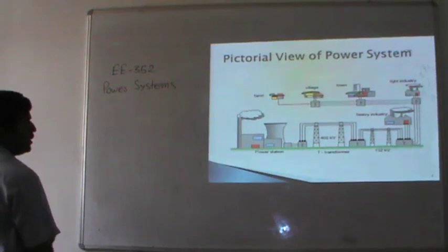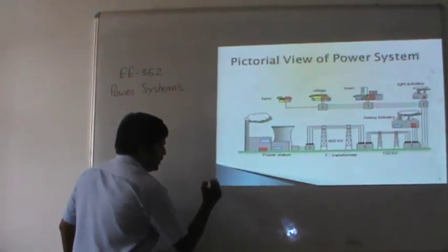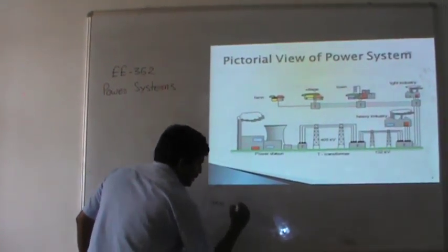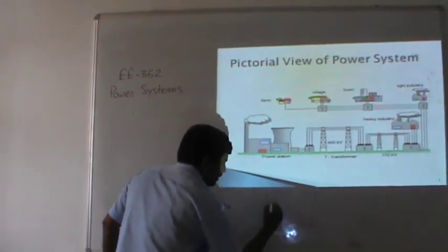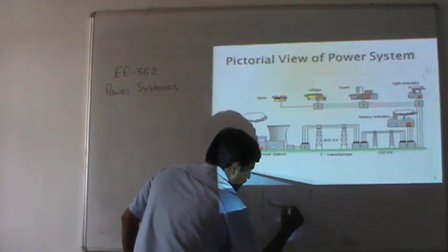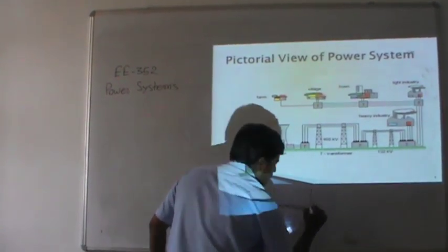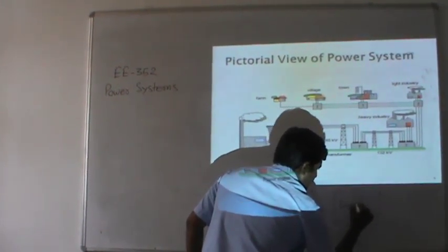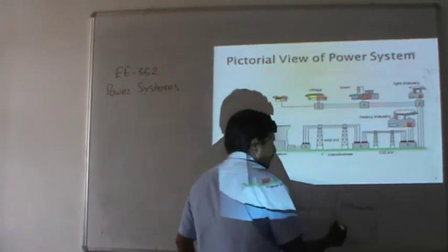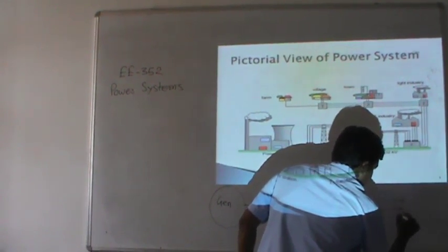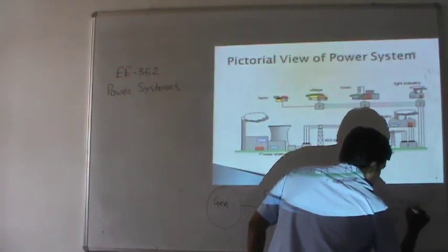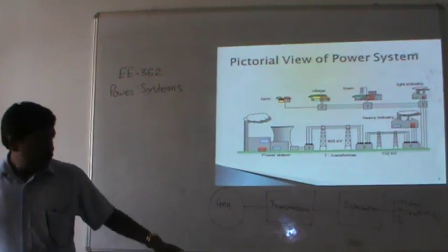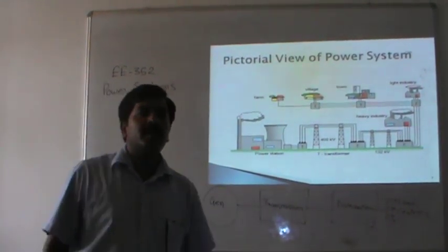As we can see, the power system has three major components: first is generation, second is transmission, and third is distribution — followed by the load center. This is the schematic block diagram of a power system.